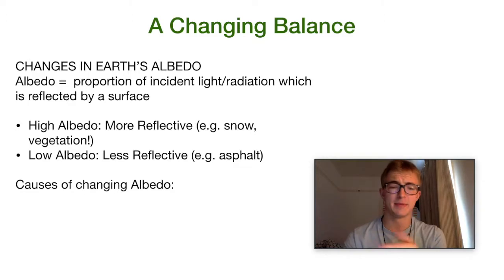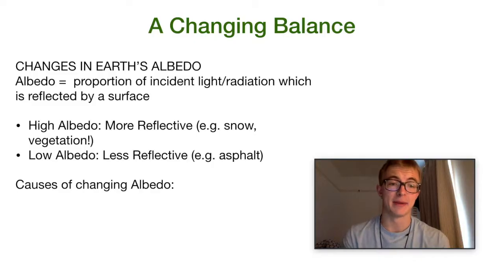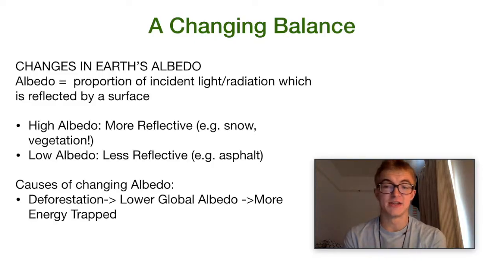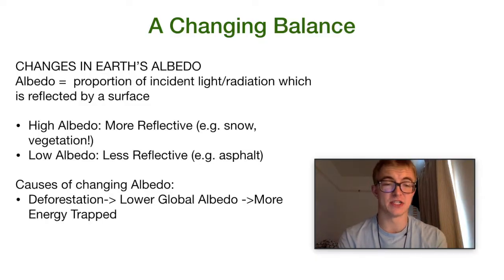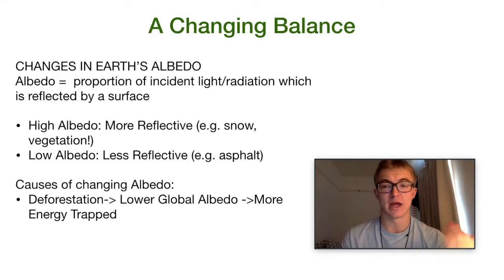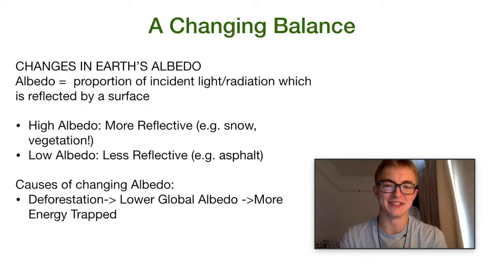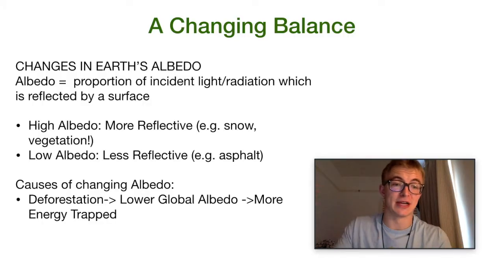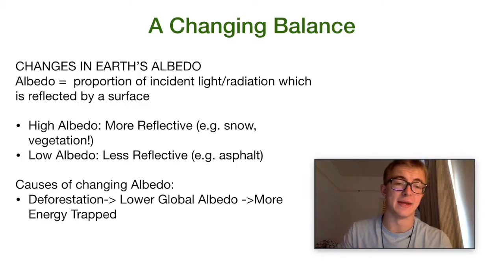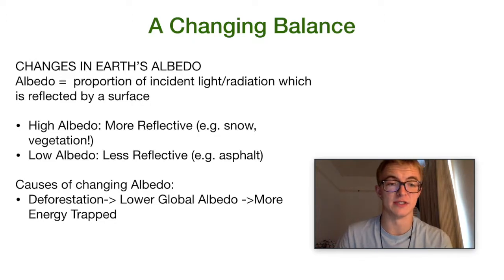Some causes of changing albedo: if you think about what has a high or low albedo, consider how that's being affected by processes. Something like deforestation — before, vegetation had a high albedo and is very good at reflecting solar radiation. When you cut that down, we actually reduce the albedo, the reflectiveness of the earth, and more of that energy is trapped and then emitted as longwave radiation, being absorbed again in the greenhouse effect.